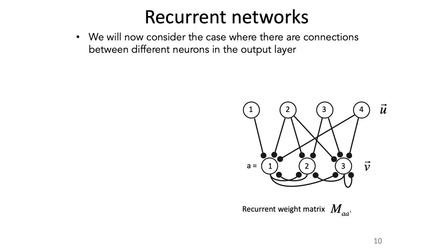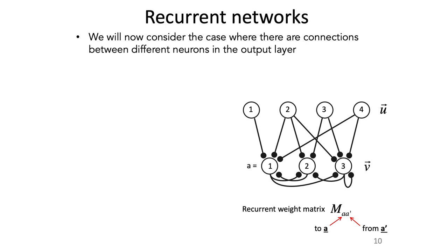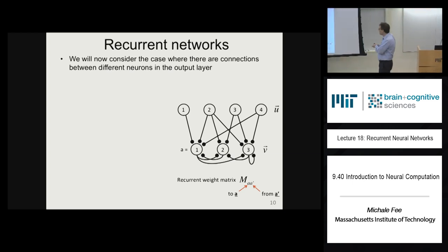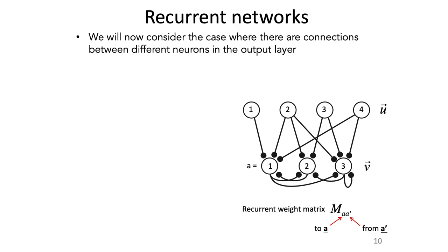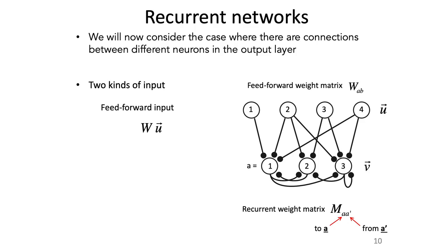In addition to weight matrix W describing connections from the input layer to the output layer, we're going to have another weight matrix describing the connections between neurons in the output layer. This recurrent weight matrix has to describe a connection from any one neuron to any other, so it's a function of both the postsynaptic and presynaptic neuron identity. So there are two kinds of input: a feedforward input from the input layer and a recurrent input due to connections within the output layer.